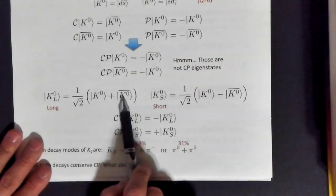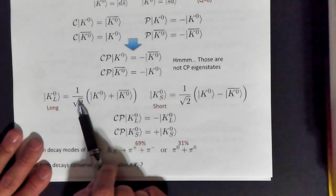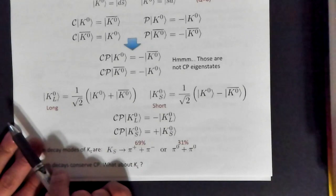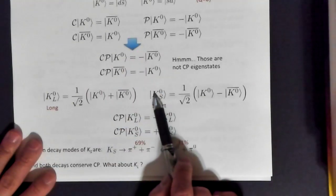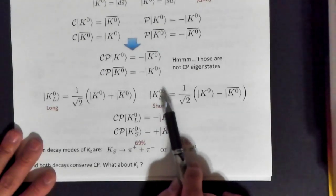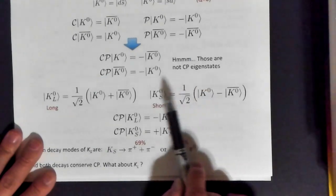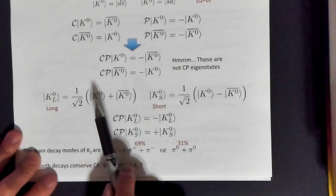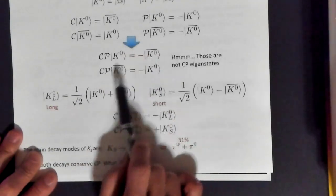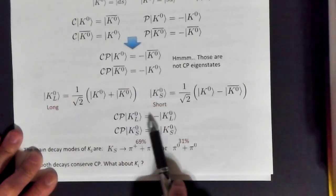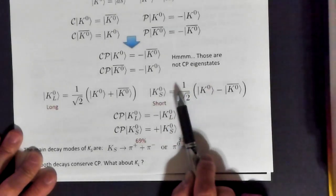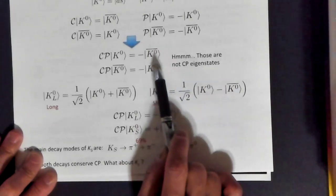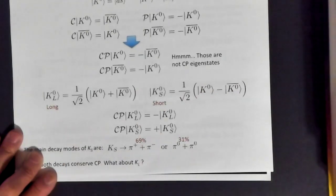There are symmetric and antisymmetric combinations that are CP eigenstates. The symmetric combination is K0-long = (1/√2)(K0 + K0-bar). The antisymmetric combination is K0-short = (1/√2)(K0 - K0-bar). Under CP, K0-long goes to minus K0-long — it has CP eigenvalue -1. But K0-short gets a plus sign under CP — it has CP eigenvalue +1.